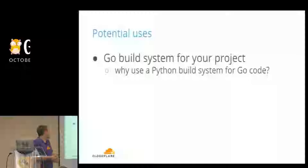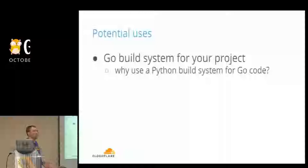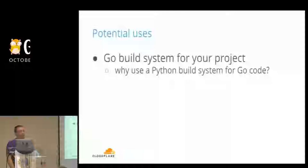So what are potential use cases? You can have a Go build system for your project. If you have a complex Go project, plain go build may not be enough. There are different build systems — Make, Python-based ones — but why use a Python build system for a Go project when you can have a pure Go build system that builds your Go code?